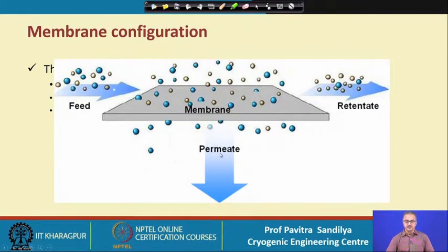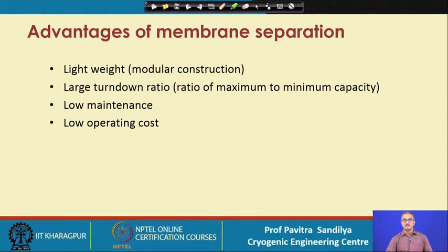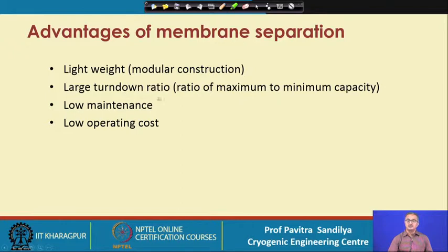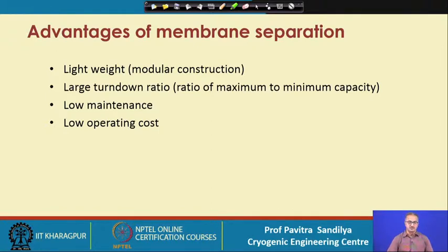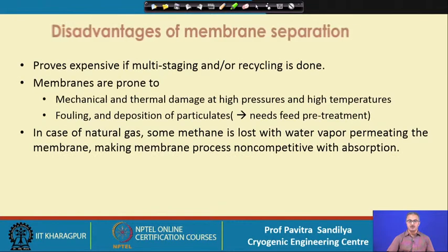Moving to applicability: the advantages of membranes are that they are quite lightweight, come in modular construction, and have a large turn-down ratio — that is, the ratio of maximum to minimum capacity. When we want to increase capacity, we simply add more modules. The cost and maintenance are also quite low, giving membranes a cost-reduction advantage.